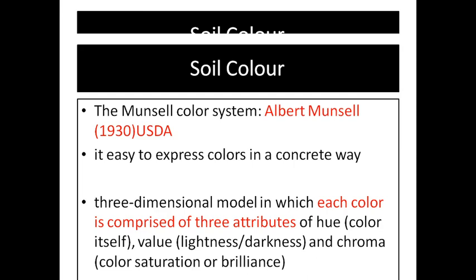The Munsell soil chart was proposed by Albert Munsell in 1933 under the guidance of the United States Department of Agriculture. It is a three-dimensional model through which one can identify specific types of soil on the basis of color, brightness, and darkness.